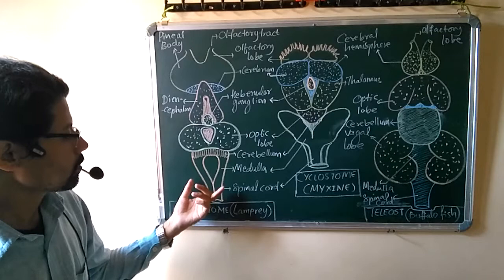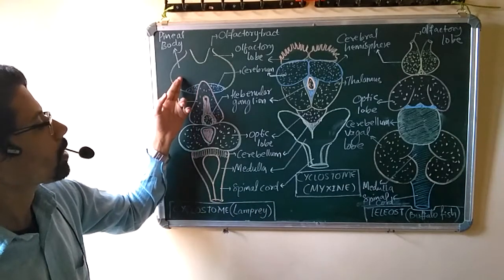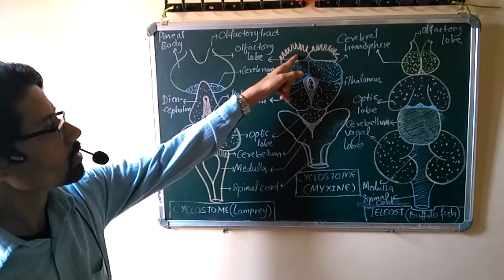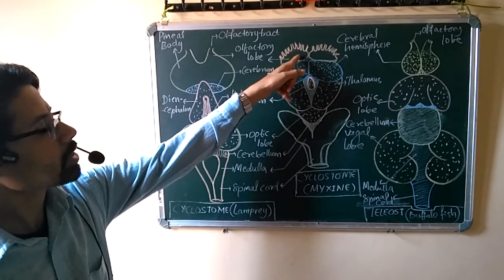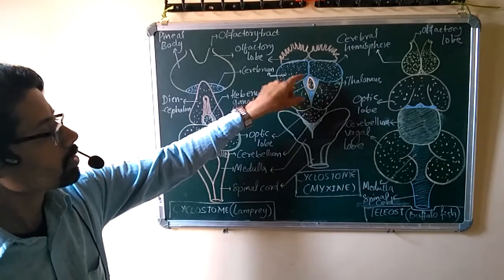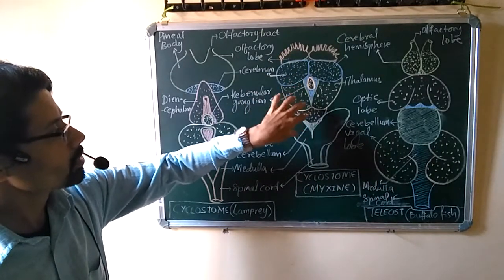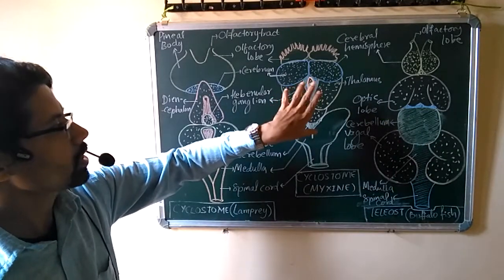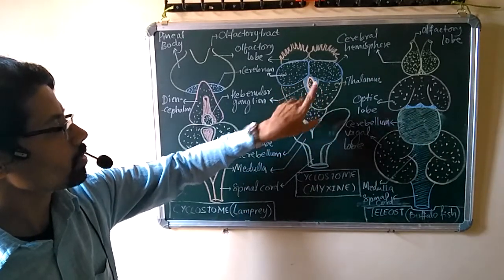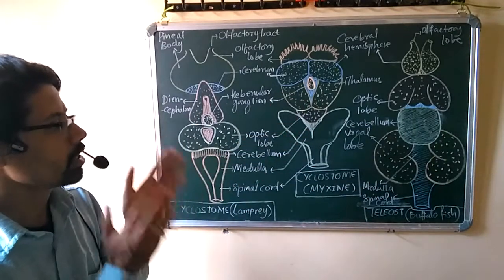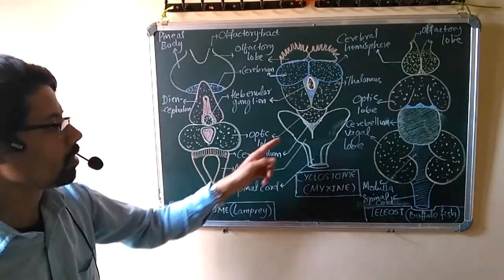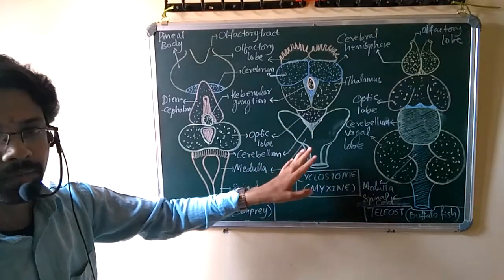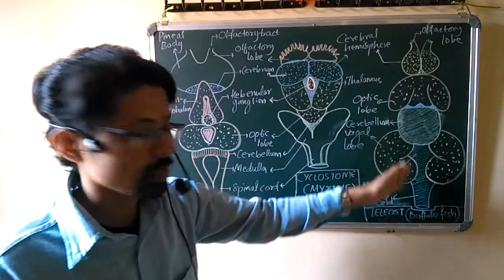Summarizing the differences seen in these three diagrams: in lamprey, the pineal body is larger. In myxine, olfactory lobes are separate with many olfactory tracts, cerebellum is larger, thalamus is larger, habenular ganglion is present but diencephalon is reduced, optic lobes are smaller, cerebellum is also reduced, and medulla oblongata is similar. So those are the key comparative differences.